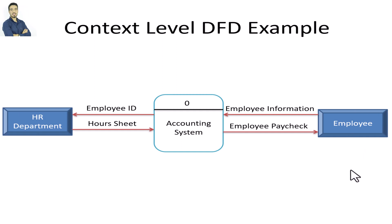If there is someone sitting at a computer inside the system, that would be an internal entity — we are not allowed to draw internal entities in a DFD. We only draw external entities. Here we want to make a context diagram, which has just external entities and the main process.